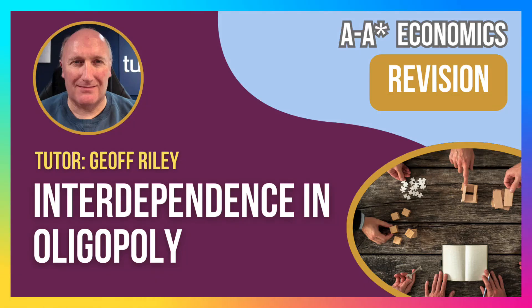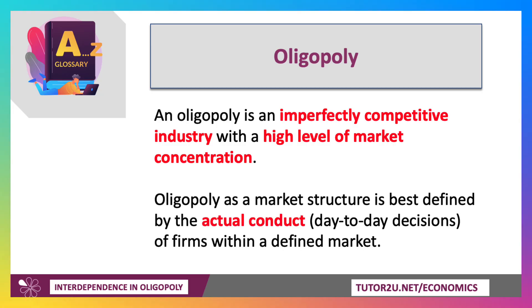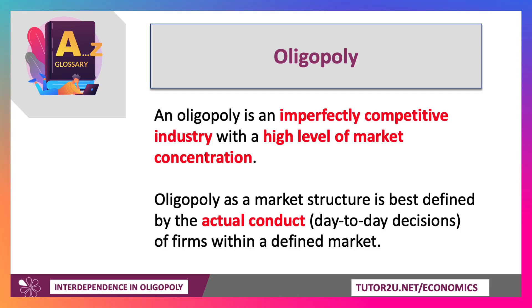In this video we're going to take a look at oligopoly and in particular the idea of interdependent behaviour. An oligopoly is an imperfectly competitive market with a very high level of concentration — in other words, a small number of big scale firms dominate the market. An oligopoly as a market structure is best defined by the actual day-to-day pricing, investment, and advertising decisions of businesses within the defined market.